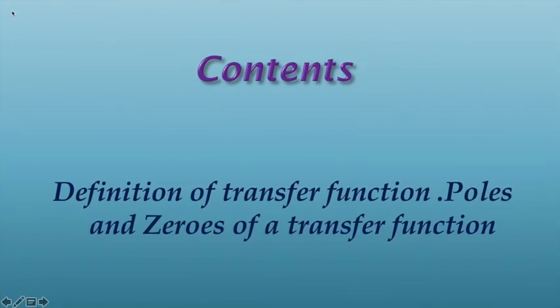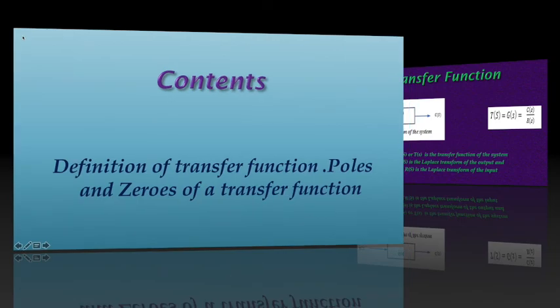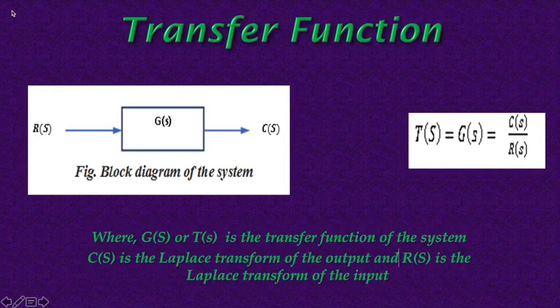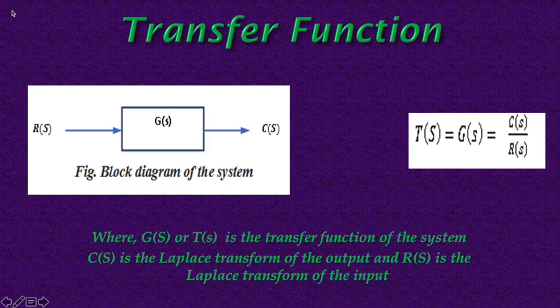That's why first we need to find the transfer function of the system. Contents: definition of transfer function, poles and zeros of a transfer function. Transfer function describes the relationship between the inputs to a system and the output from that system. Transfer function of a control system is defined as the ratio of the Laplace transformation of output response to the Laplace transform of input.